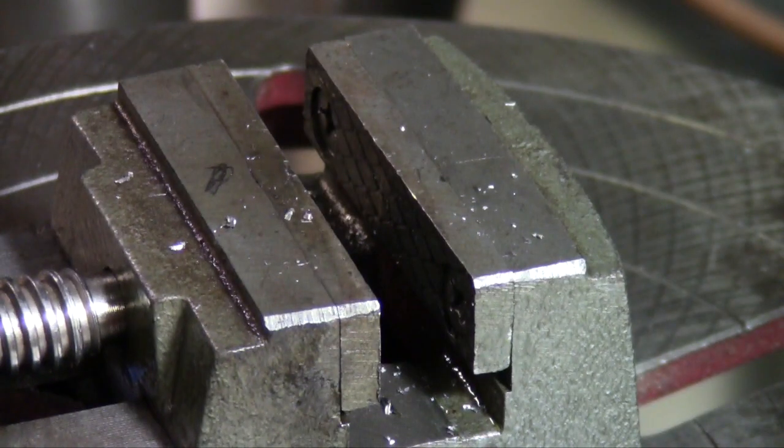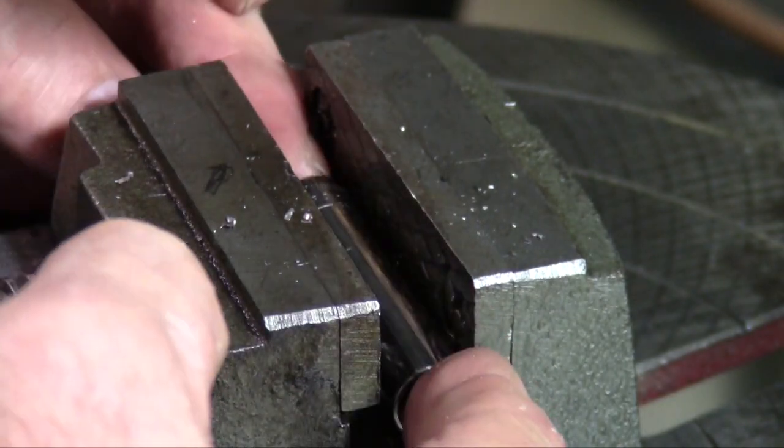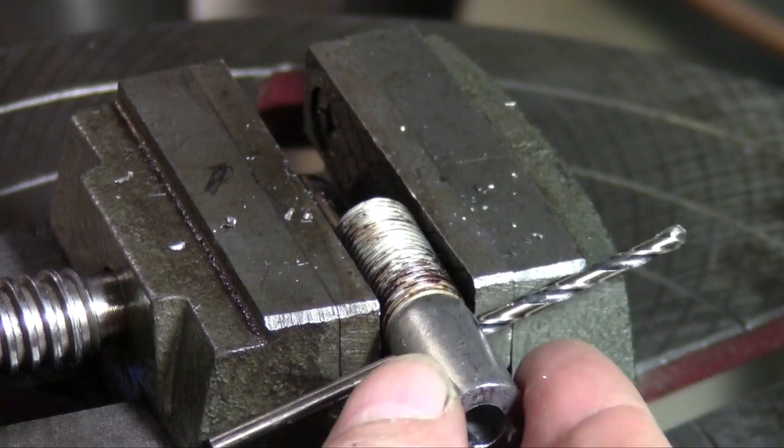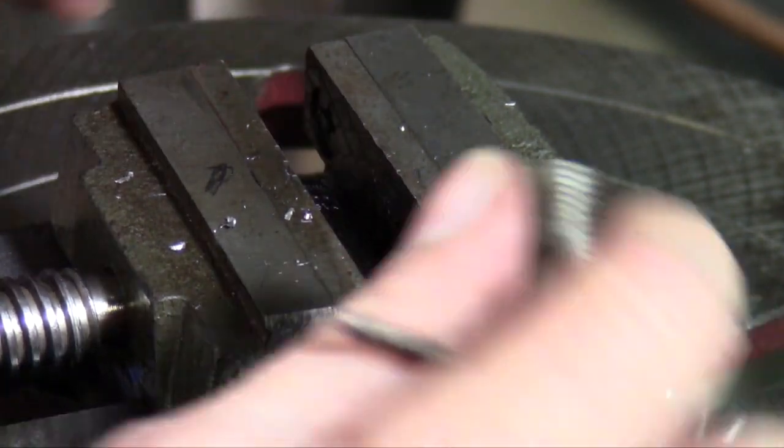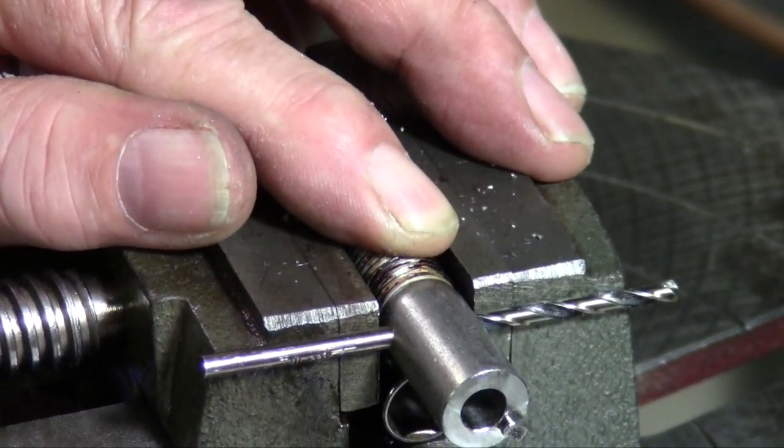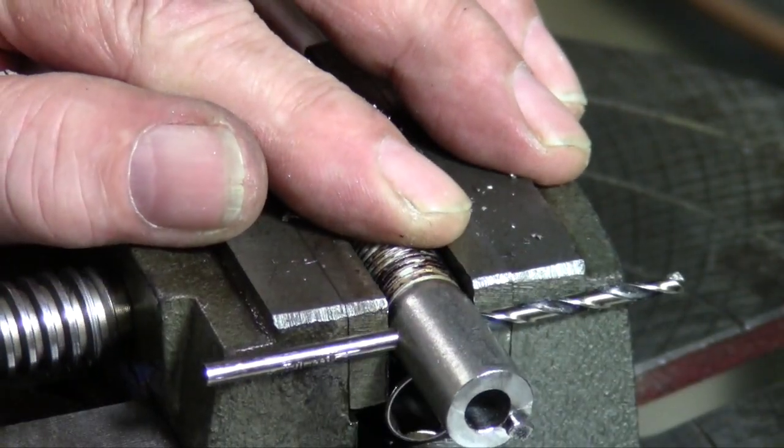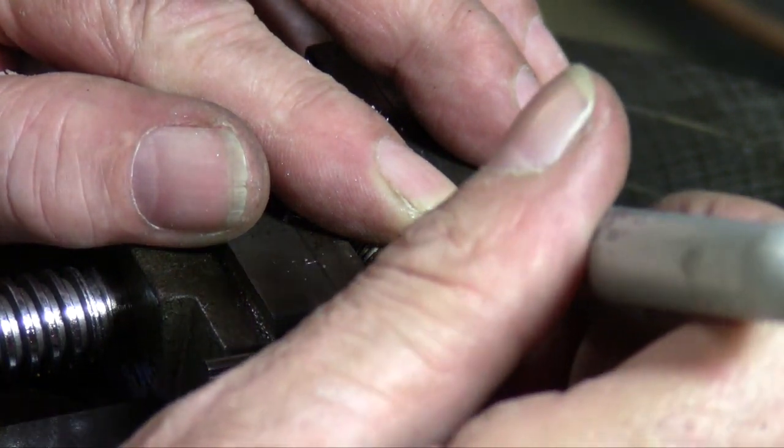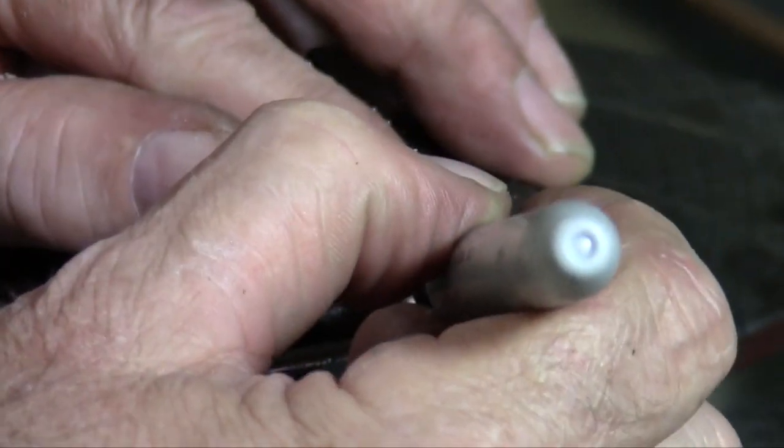And I'm going to put my deep well socket back in the vise and now I want this turned 90 degrees in here. So that's right where I want it. I might want to come in with the Sharpie. I've got it fairly square here, close enough. I'm going to put a little mark up here so I know where my top is at, where I want this thing.